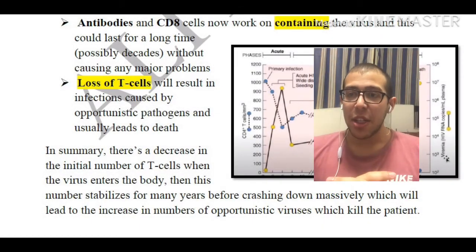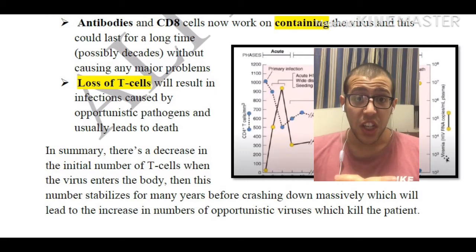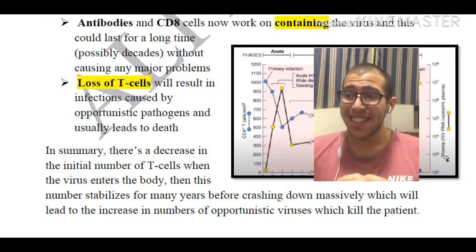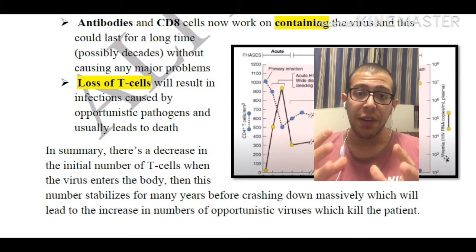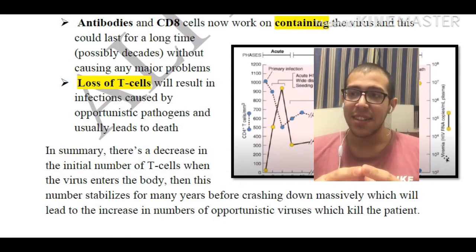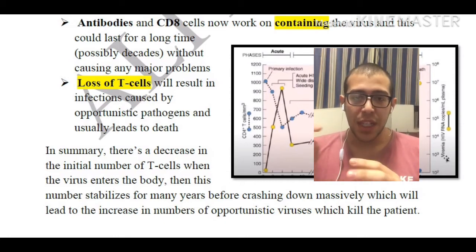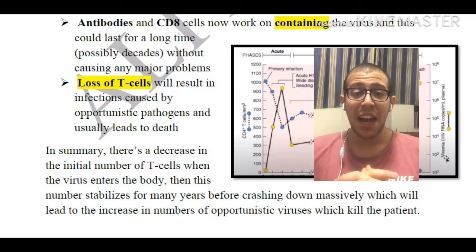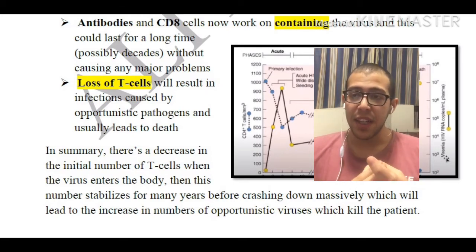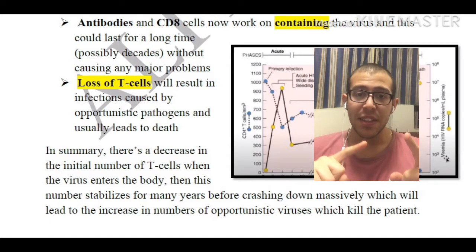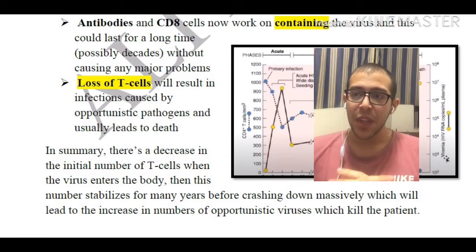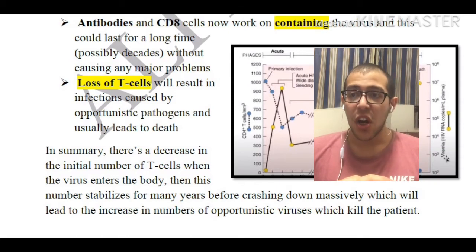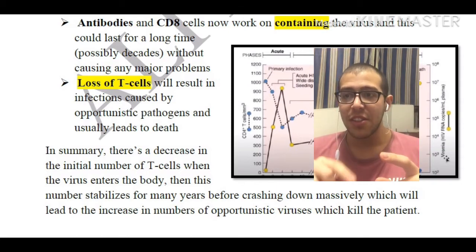Antibodies and CD8 cytotoxic T cells work on containing the virus, and this can last for a very long time — possibly decades. However, while they fight, they delay but do not eliminate the virus. The eventual loss of T cells will result in infections caused by opportunistic pathogens, which usually leads to death.